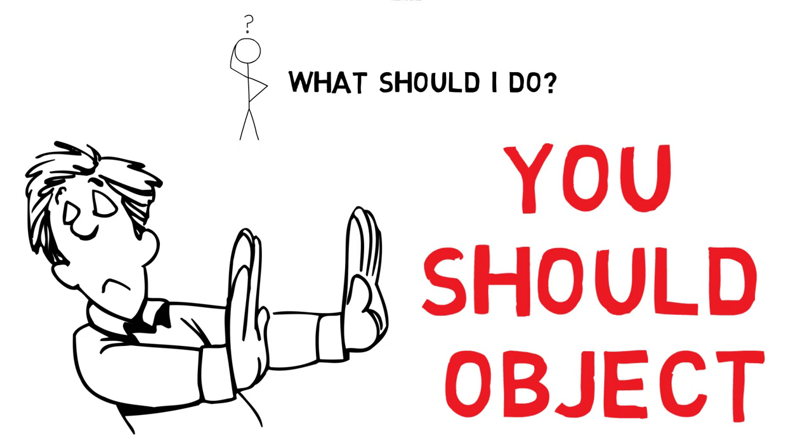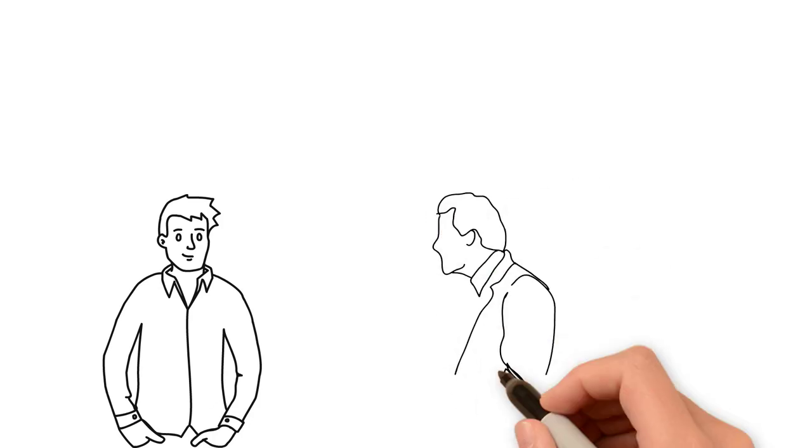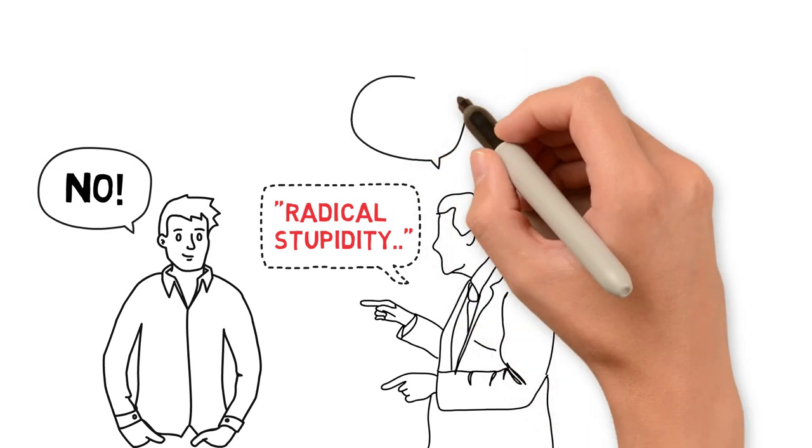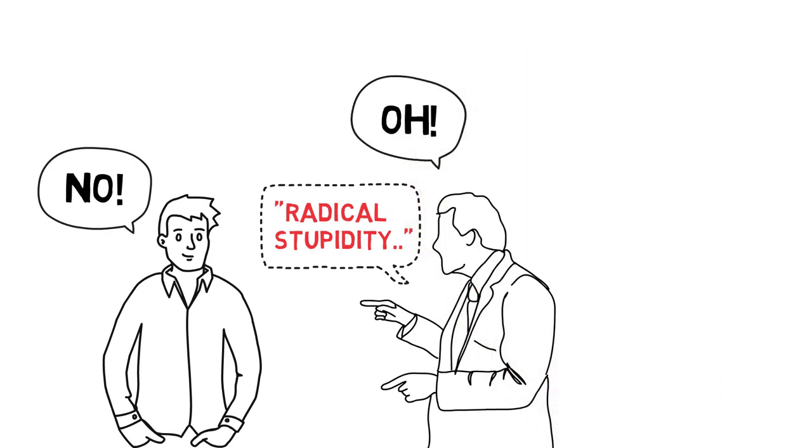And the answer to that is, you should object at the earliest possible point. Because first of all, you'll find that if you object to radical stupidity when it first emerges, you kind of make people aware of the fact that what they're doing is radically stupid, and they'll usually back off.